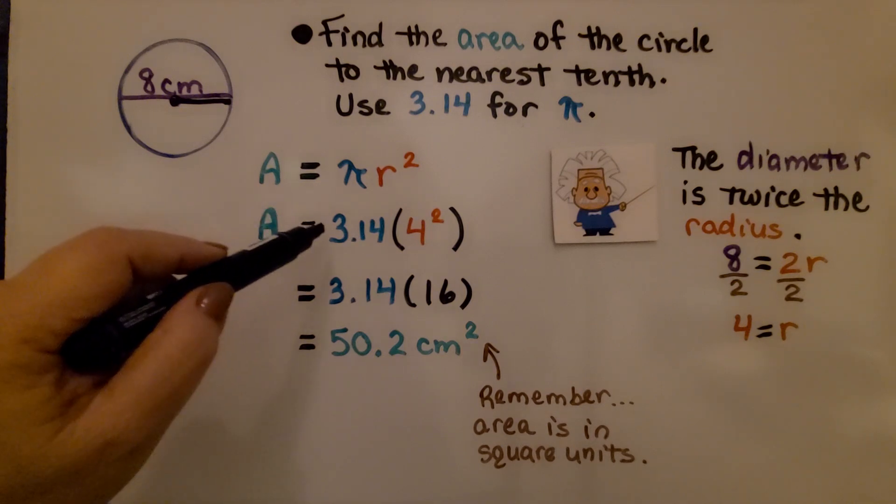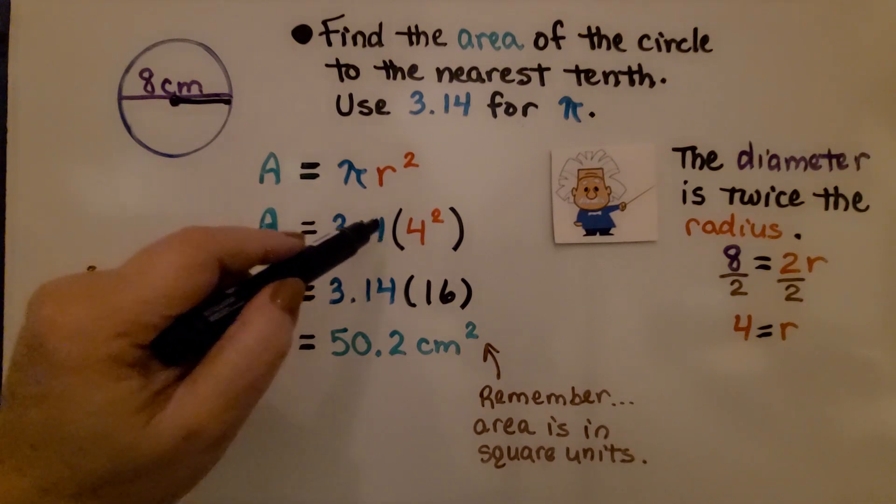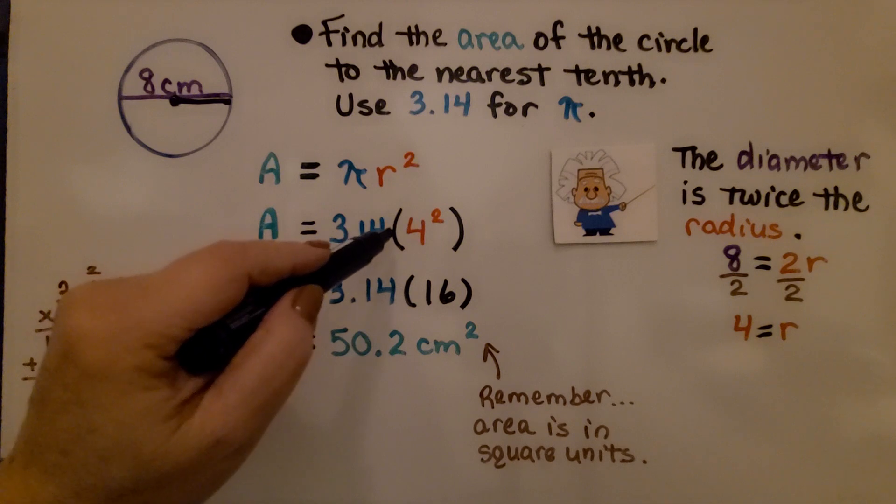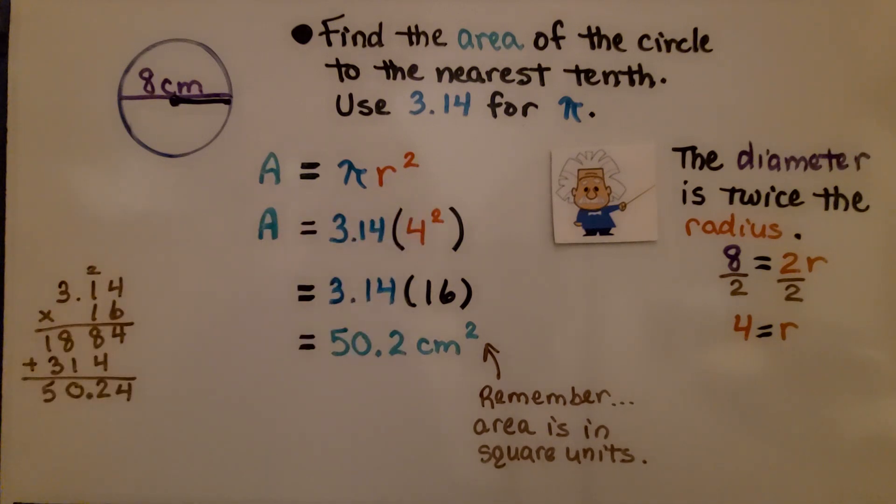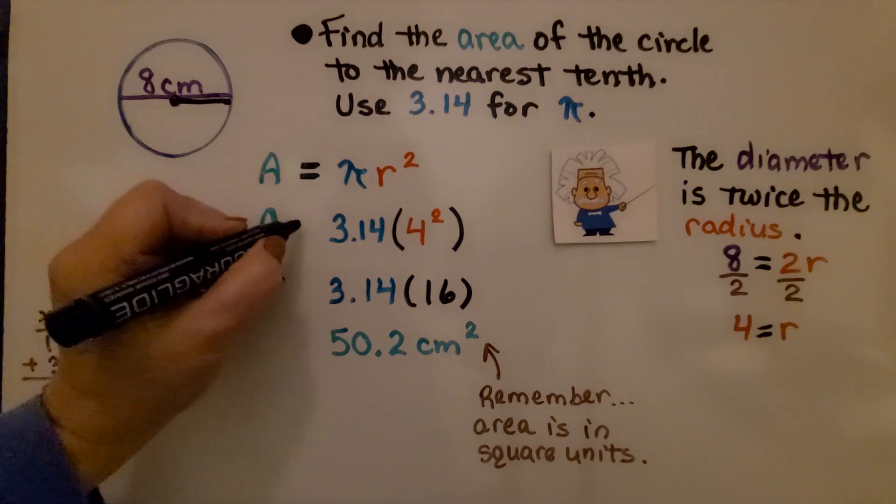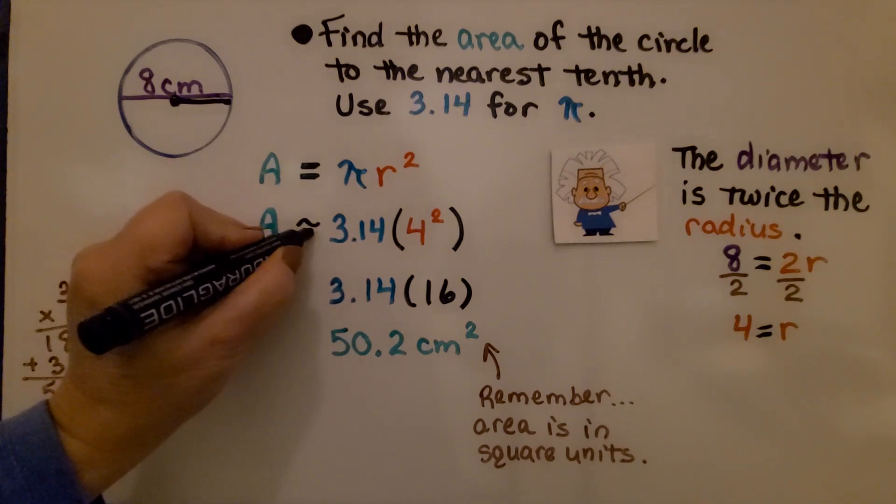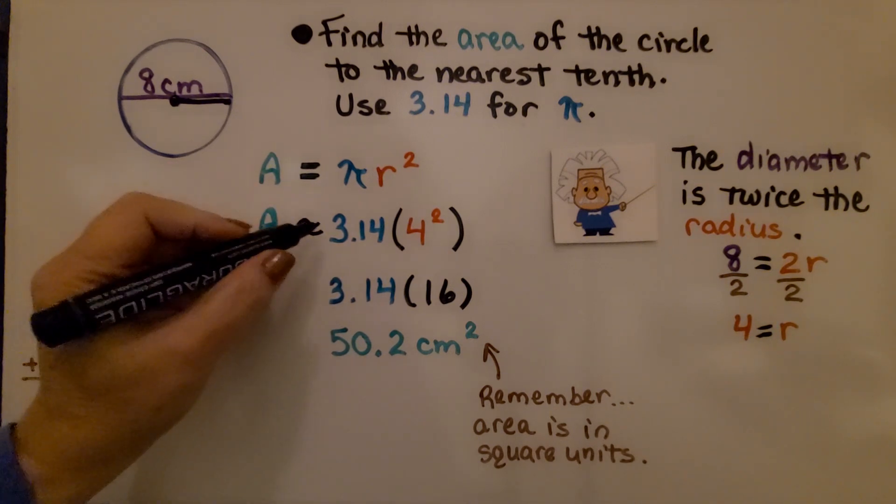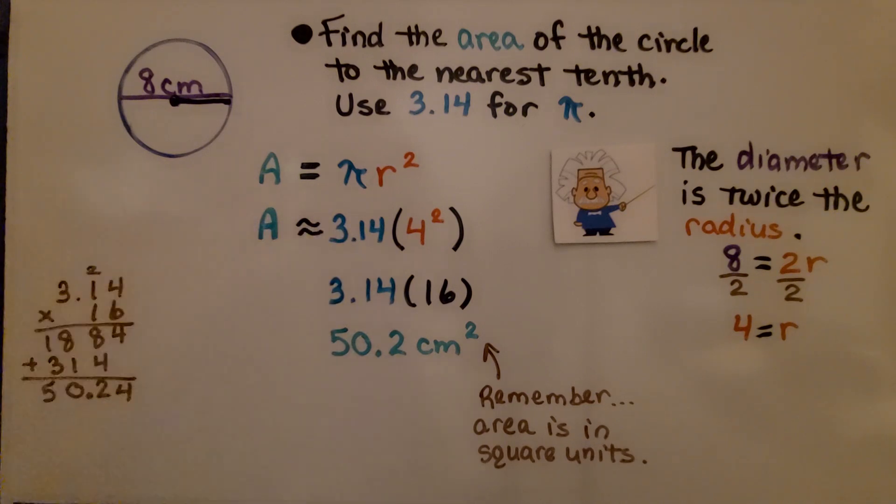We have area is equal to 3.14 times four to the second power. And actually, all of these should be approximate symbols because we're not using the symbol for pi. We're using an approximation of 3.14, aren't we?